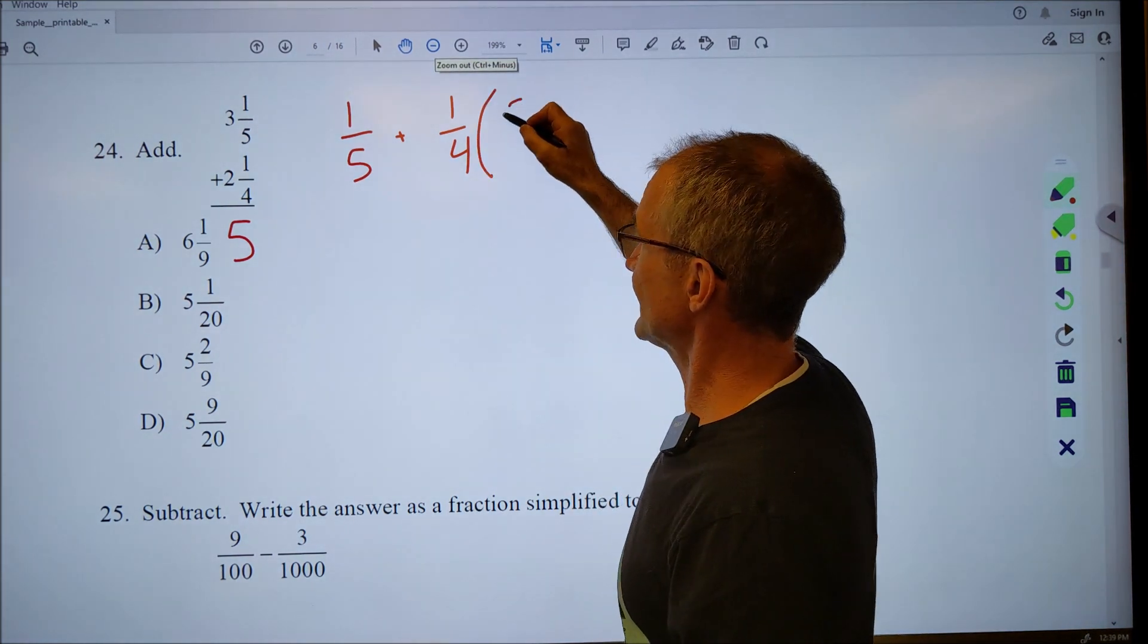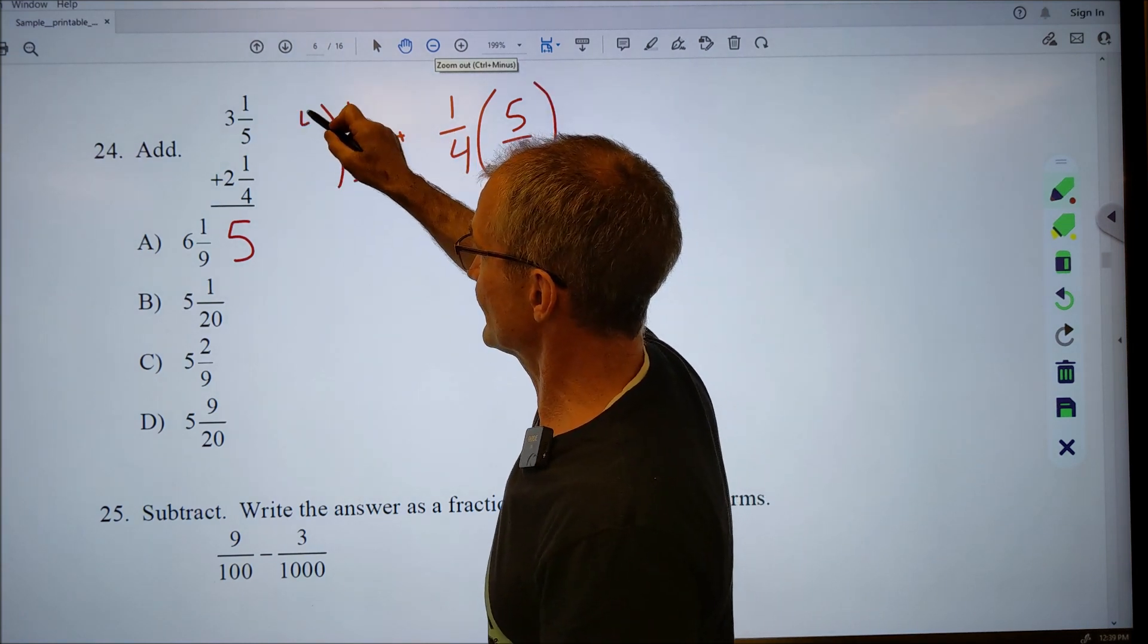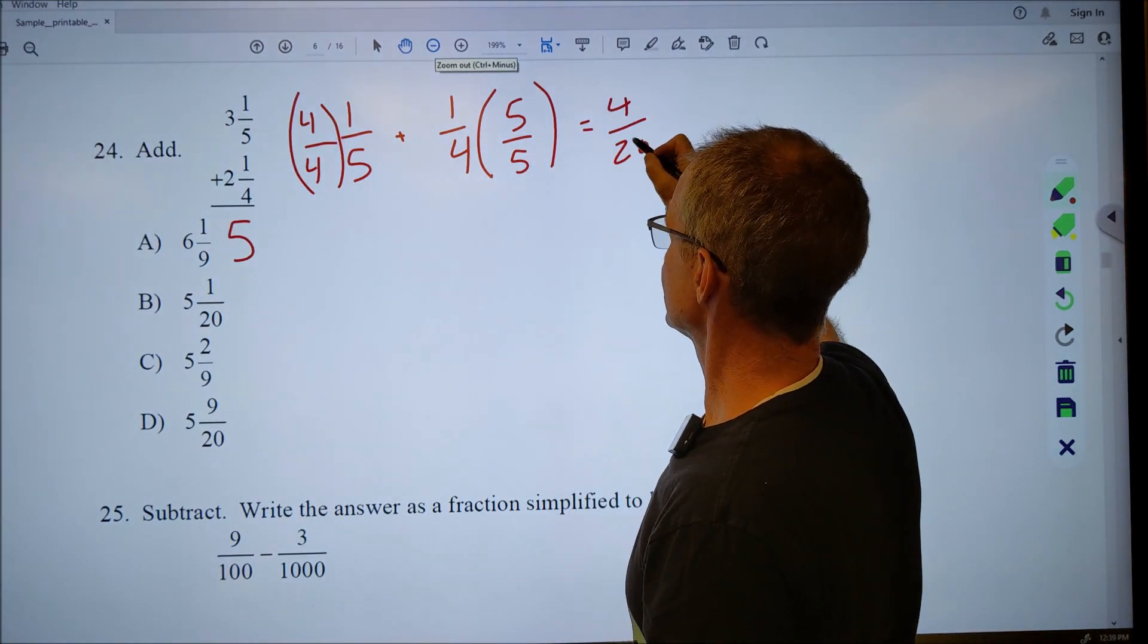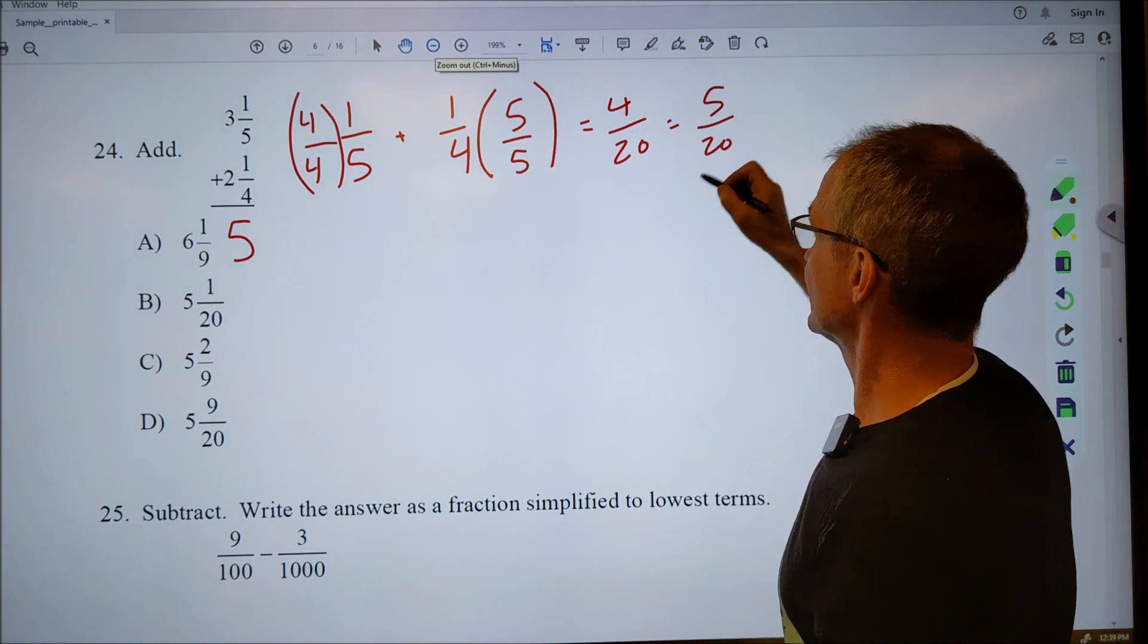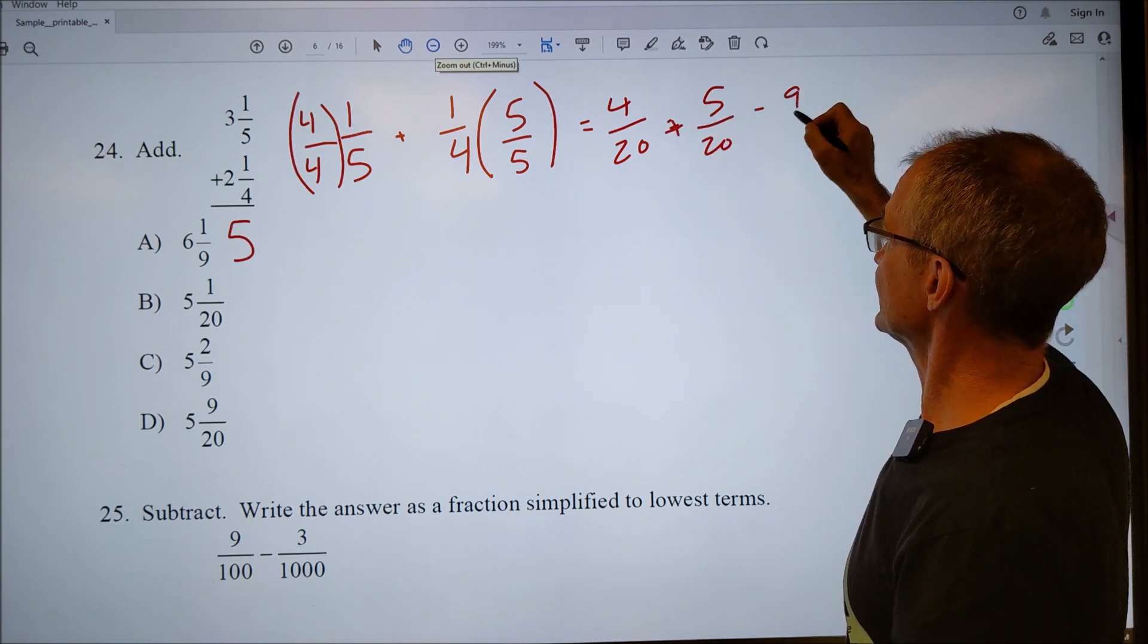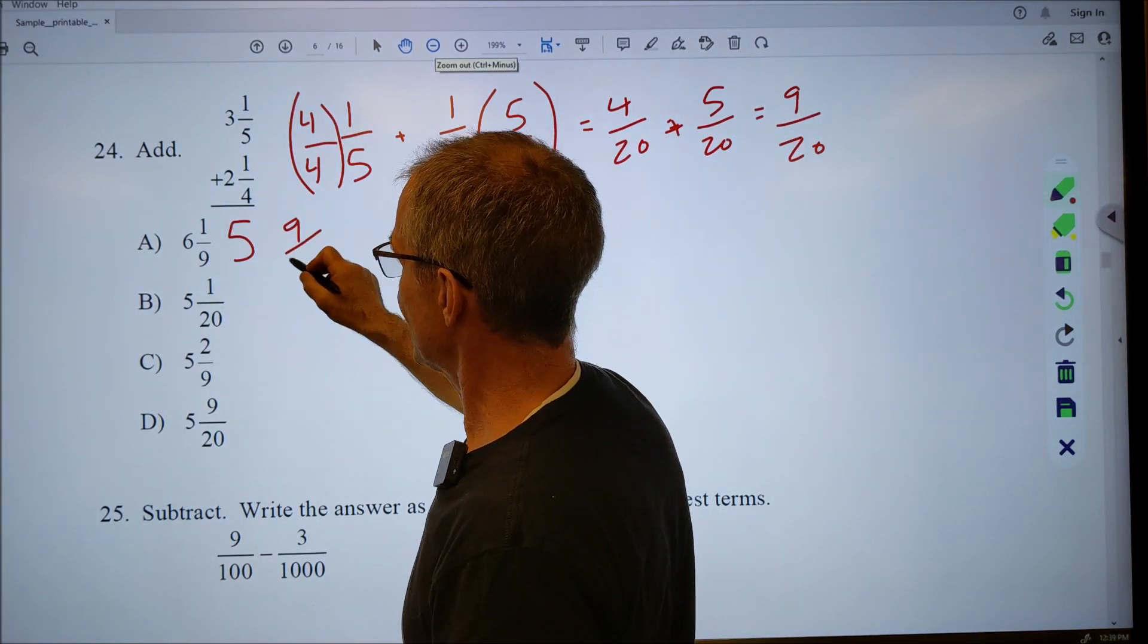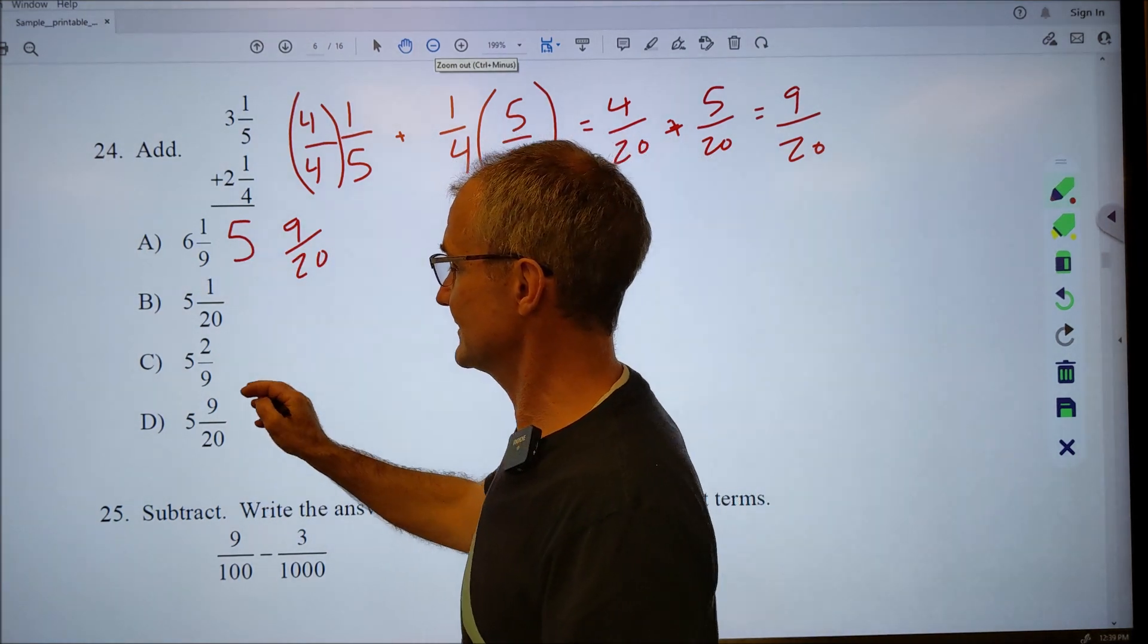So I have to multiply this by a five over a five. I got to multiply this by a four over a four. I'm multiplying by a factor of one, so it doesn't affect the value. That's going to give me four twentieths for that one, five twentieths for this one. Add across the top to get nine over that common denominator of twenty. So the fractional part is nine twentieths. So I have five and nine twentieths. I look through my answers here and here it is, answer D.